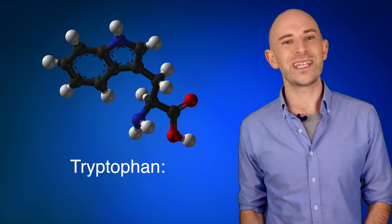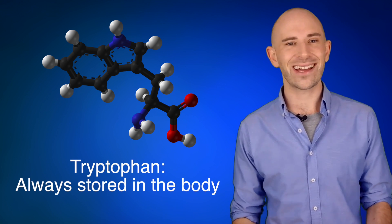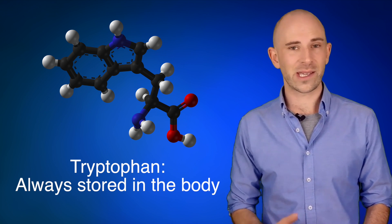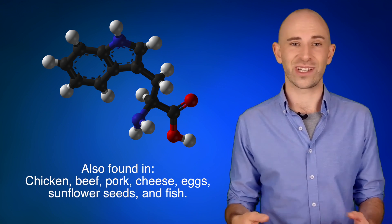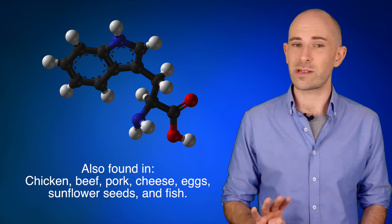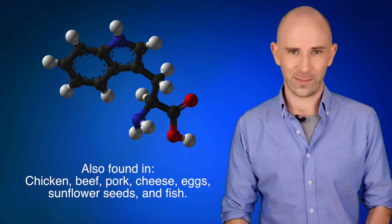Now there is typically always a nice store of tryptophan in your body at any given time due to the fact that it's not only prevalent in turkey, but also higher levels than in turkey per ounce can be found in chicken, beef, pork, cheese, chicken eggs which contain nearly four times as much tryptophan per ounce over turkey, sunflower seeds, and many types of fish.